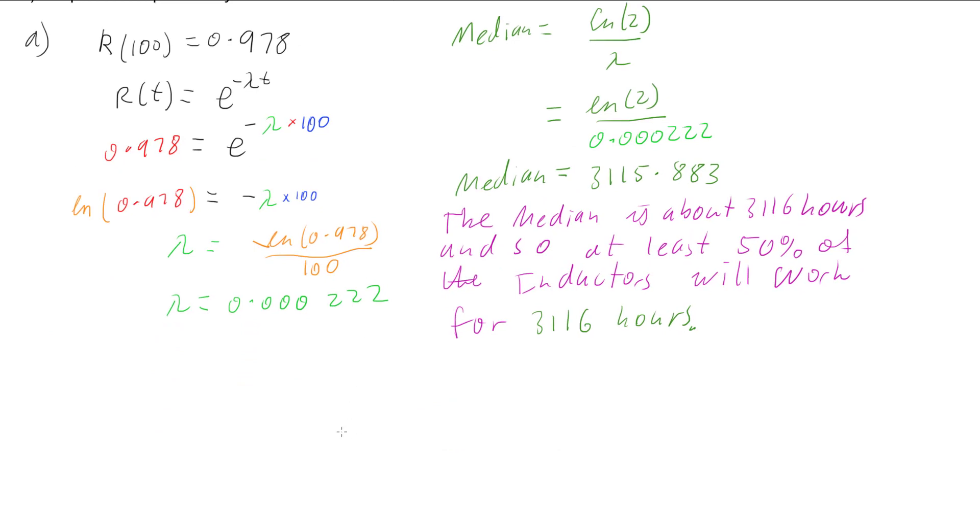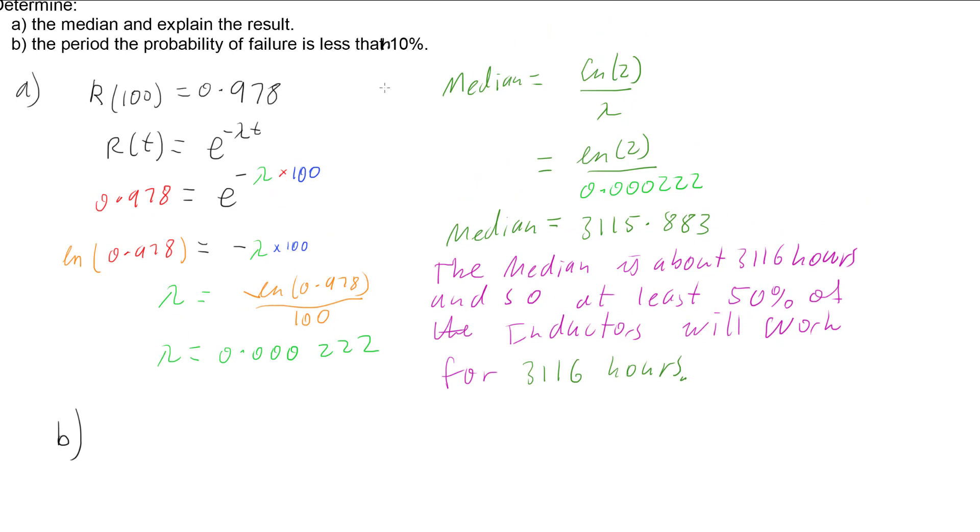So let's go and have a look at part B. Part B is asking for the period the probability of failure is less than 10%. So that means that our probability of failure is less than 0.1. And failure is the opposite of success. So we can use our reliability function, R of t, and take the complementary, which means that less than complementary is greater than or equal to 0.9.